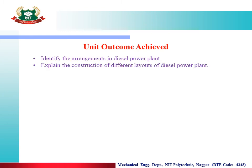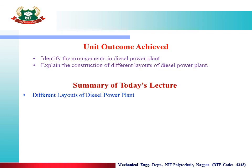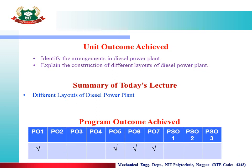Learning outcomes achieved by this lecture: identify the arrangements in a diesel power plant, and explain the construction of different layouts of a diesel power plant. Summary of today's lecture: different layouts of diesel power plant. Program outcomes achieved are PO1, PO5, PO6, and PO7, as mapped by the table given below.